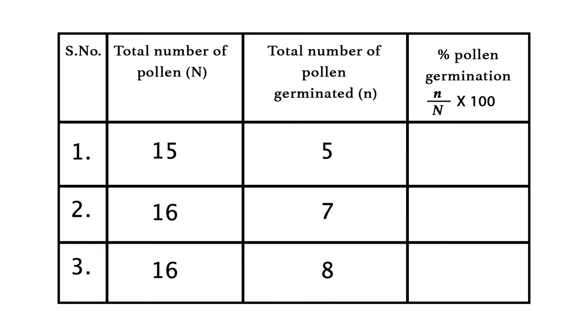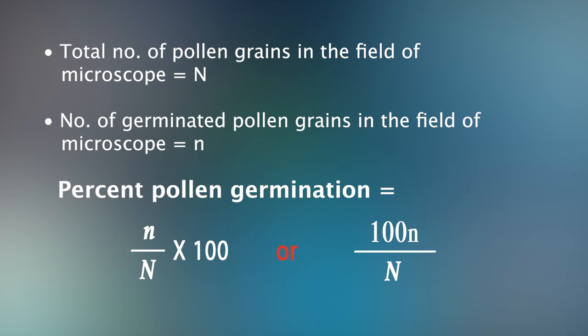Pollen germination in percentage: in the first case it is 5 upon 15 into 100, so the percent germination is 33.33%. The formula is n upon N into 100 — that is, number of pollen grains germinated (n) upon total number of pollen grains in the microscopic field (N), multiplied by 100. This is how we calculate percent pollen germination for the first slide prepared using pollen germination medium.